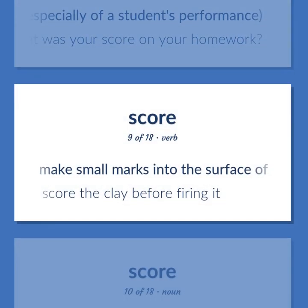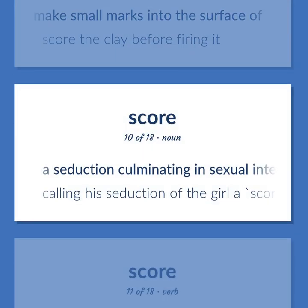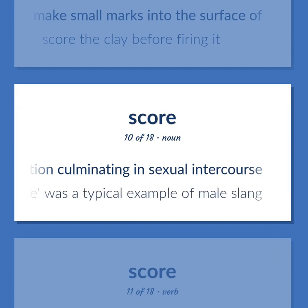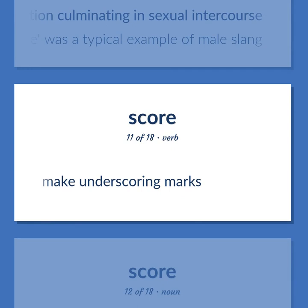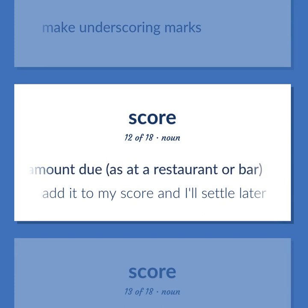Score: to make small marks into the surface of — score the clay before firing it. A seduction culminating in sexual intercourse — calling his seduction of the girl a score was a typical example of male slang. To make underscoring marks. An amount due, as at a restaurant or bar — add it to my score and I'll settle later.